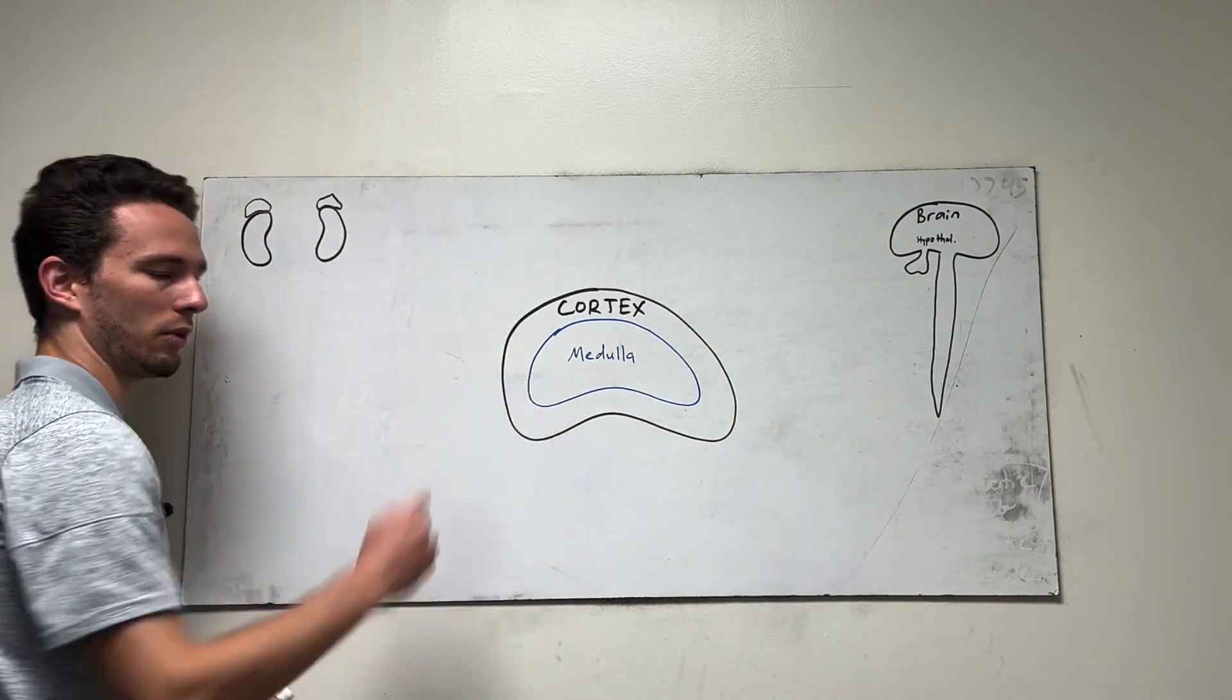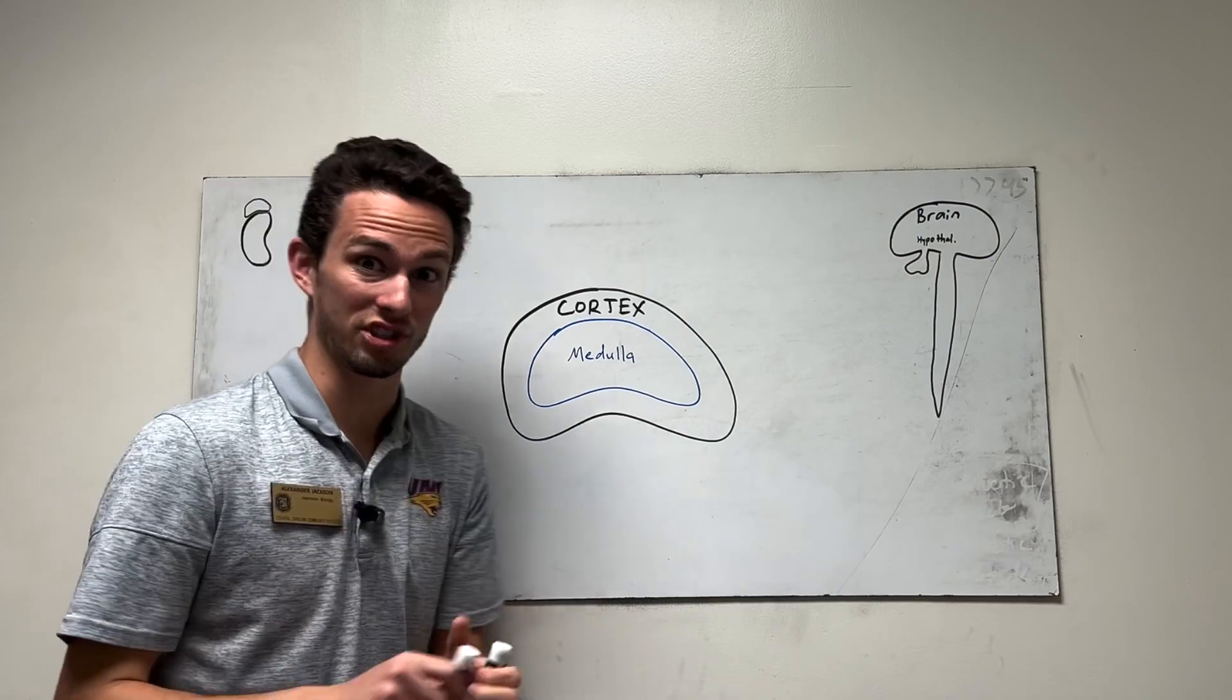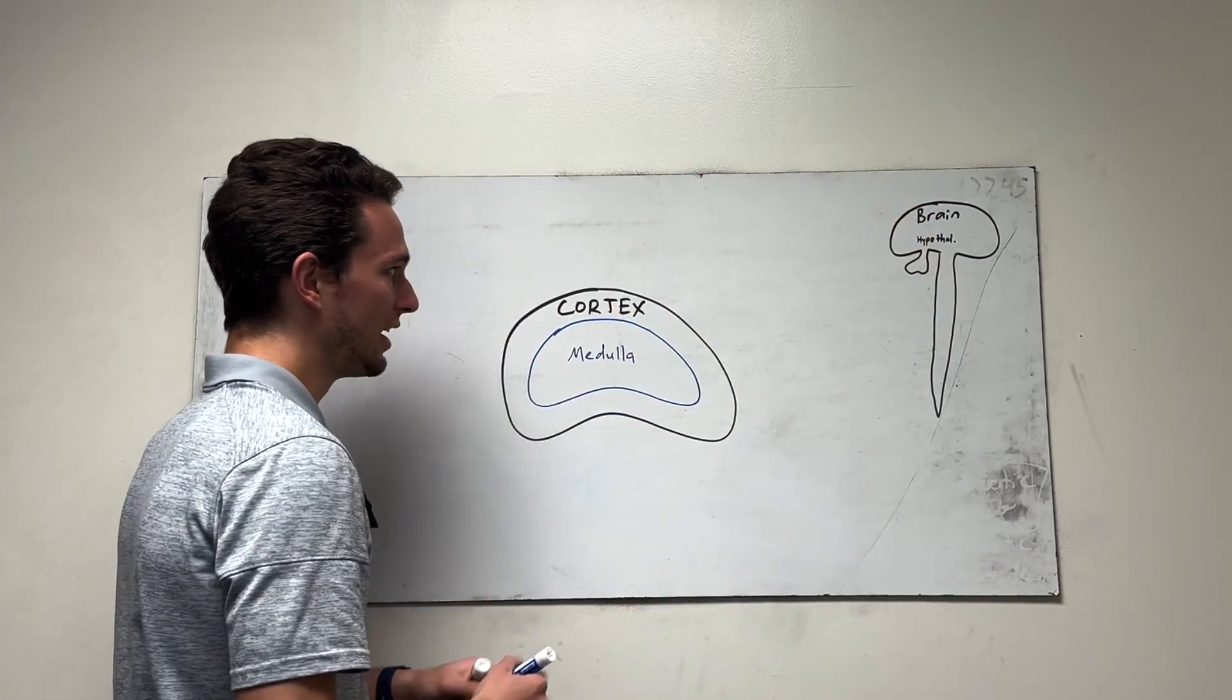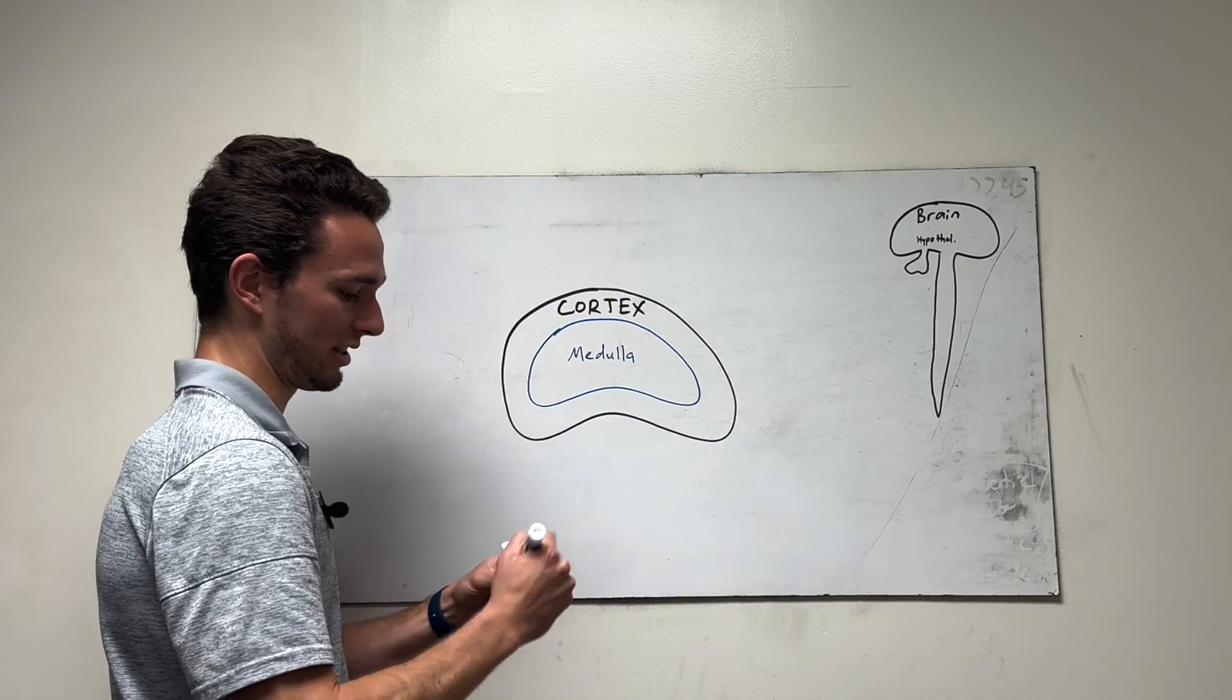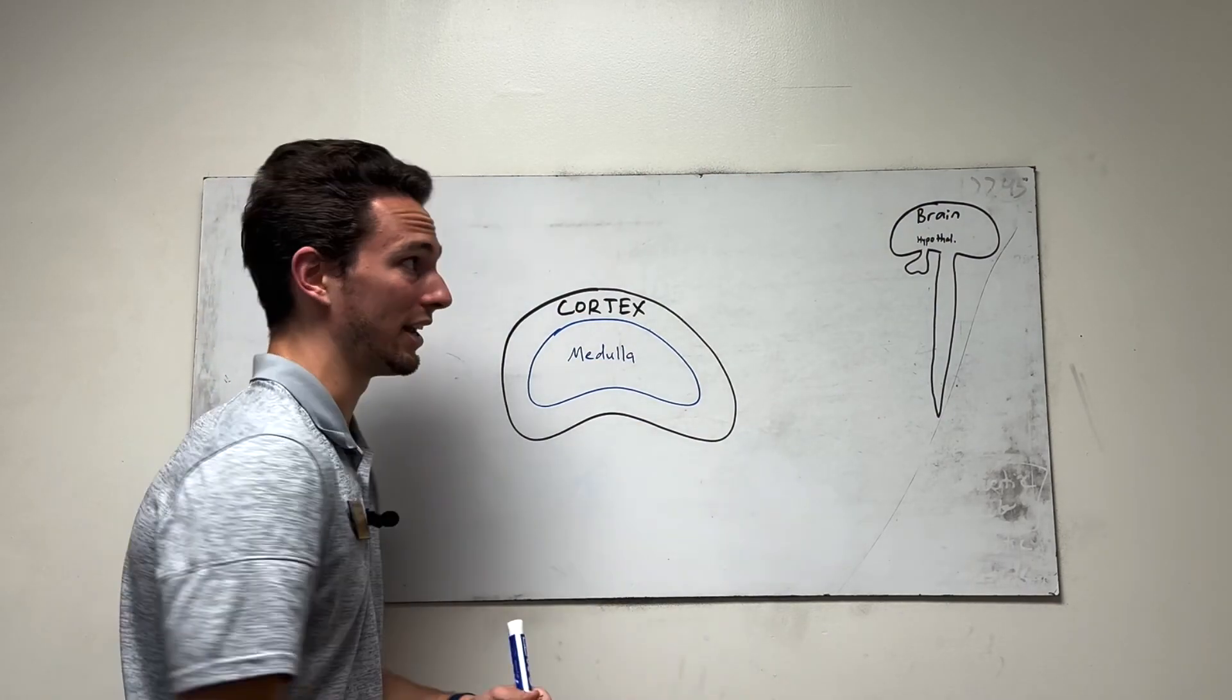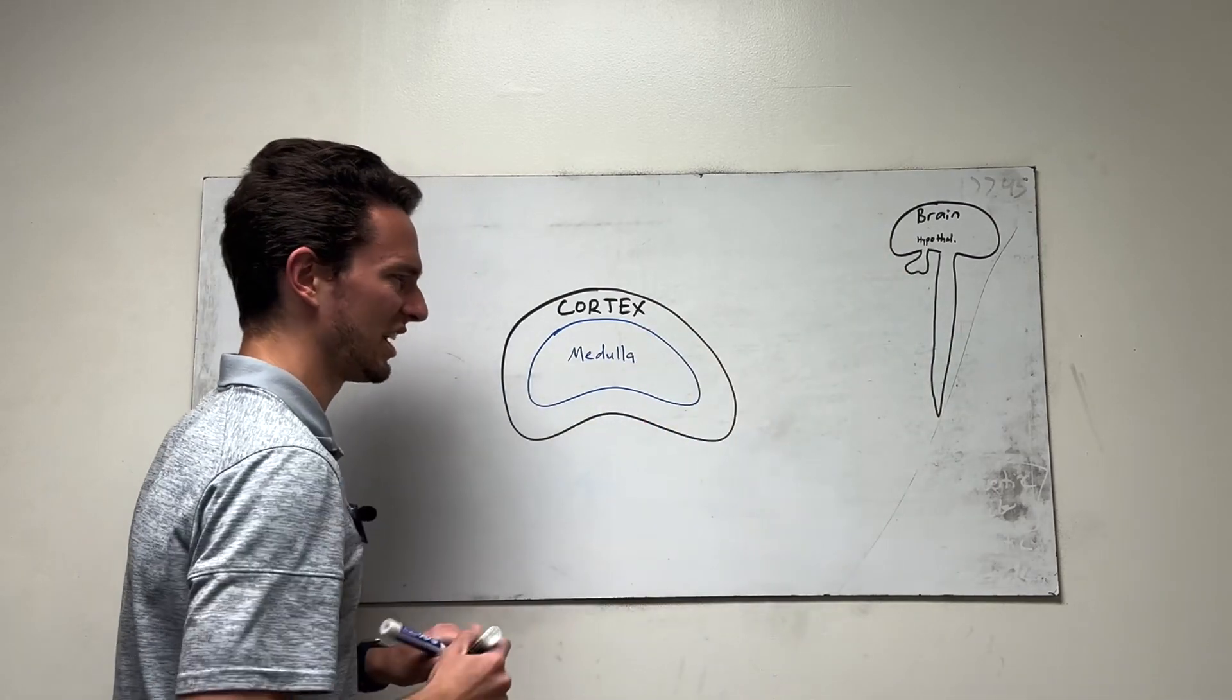Now we're going to start with the medulla and what it secretes because it's a little more simple and it's going to start in the central nervous system, specifically in the hypothalamus of the brain. So the hypothalamus we know is the main regulator of homeostasis, right? Starts with the H. I remember homeostasis.